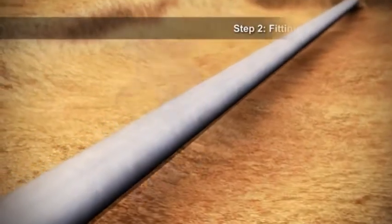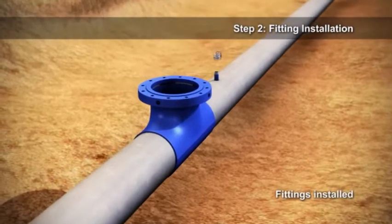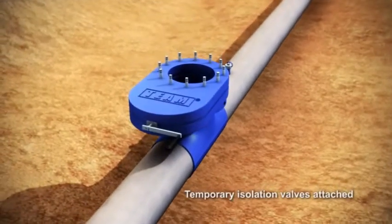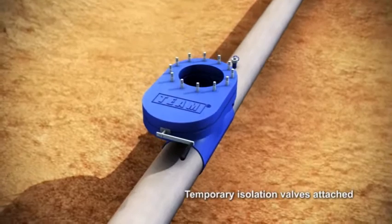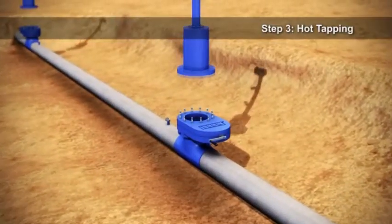Step 2: Fitting Installation. The line stop fittings and pressure equalization fittings are installed by welding them directly to the pipeline. Then, the temporary isolation valves are attached to fittings.